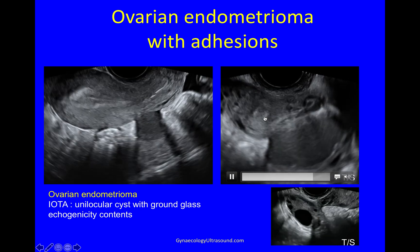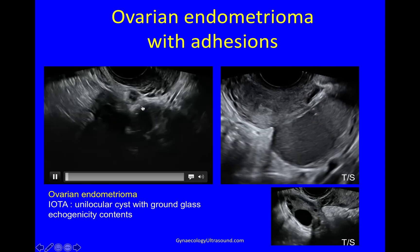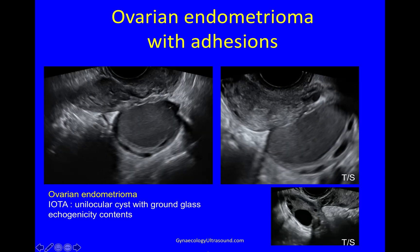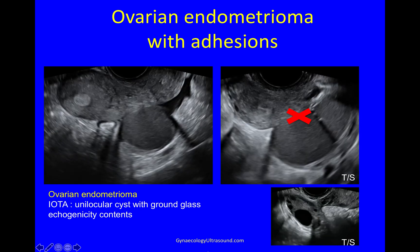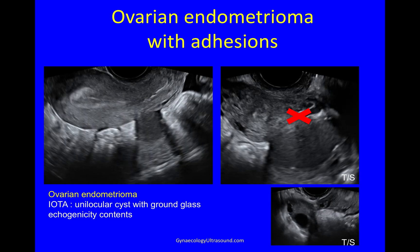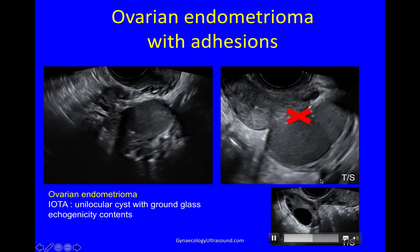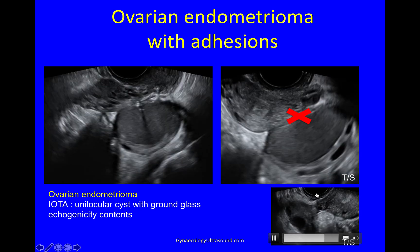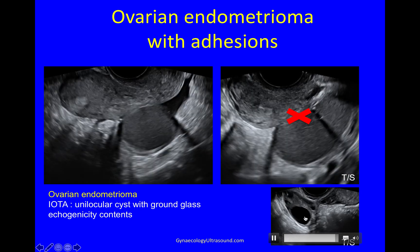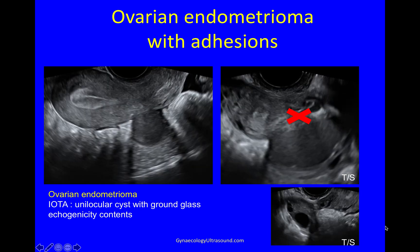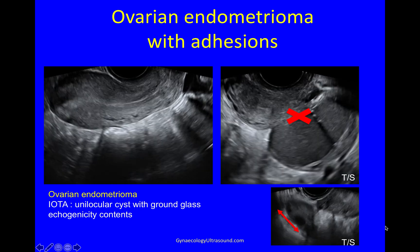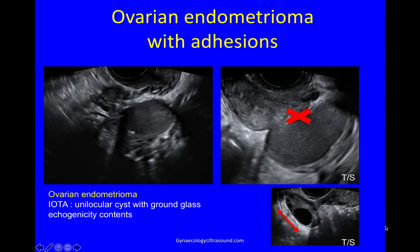This is the level of the internal os just there. And compare that to the other ovary, with which the very gentle pressure of the probe in the vagina is cantilevering — that's a nice mobile ovary.